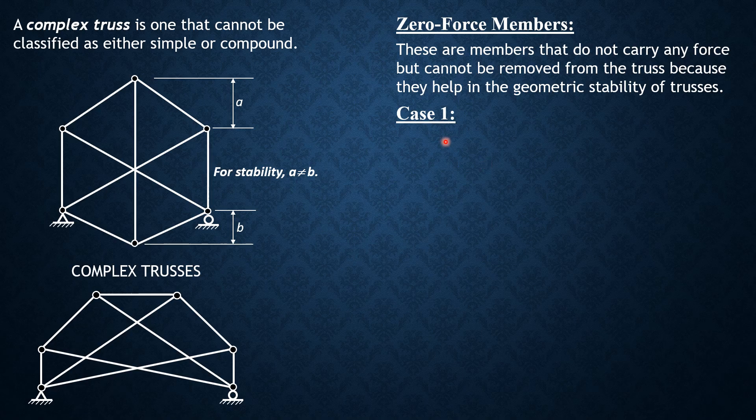There are two cases to identify them. Case one: if there are two forces that are not collinear, then its force is zero.